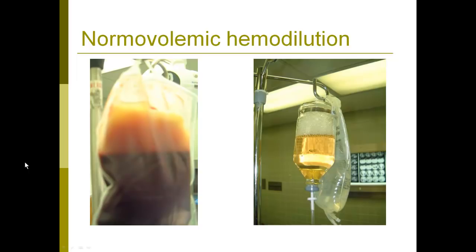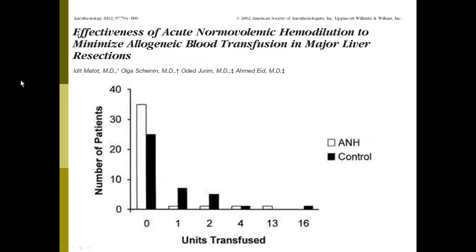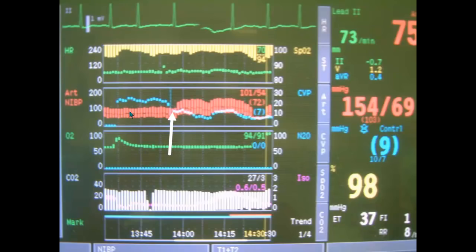With normovolemic hemodilution, the idea is that you take whole blood off a patient in the operating room and replace it with colloid and/or crystalloid, leaving the patient normovolemic but with a lower hematocrit so that shed blood is lower in hemoglobin concentration. A study from Germany showed that in a randomized trial, this technique significantly reduced the amount of transfusion needed — the number of patients with no blood transfused increased with the use of normovolemic hemodilution. CVP monitoring is used, with a goal of keeping CVP approximately in the range of 5.